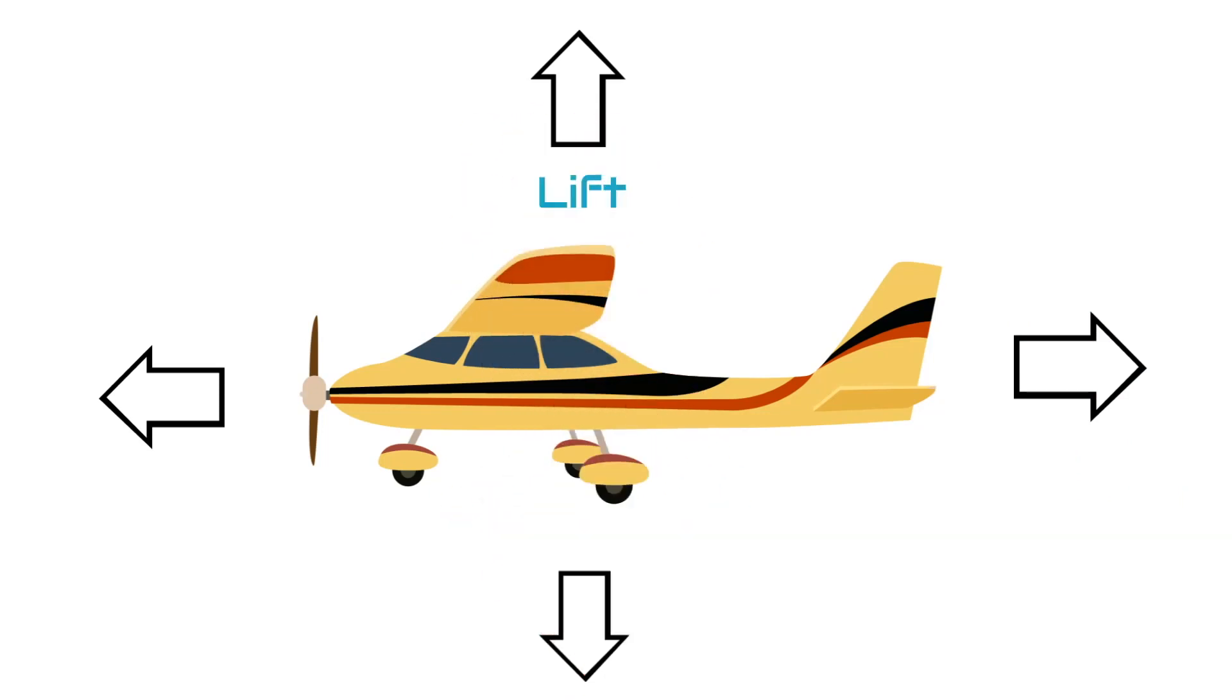Lift is generated by the airplane, mostly by its wings, as it moves through the air. Weight is the force of gravity acting on an airplane and pulling it towards the ground.